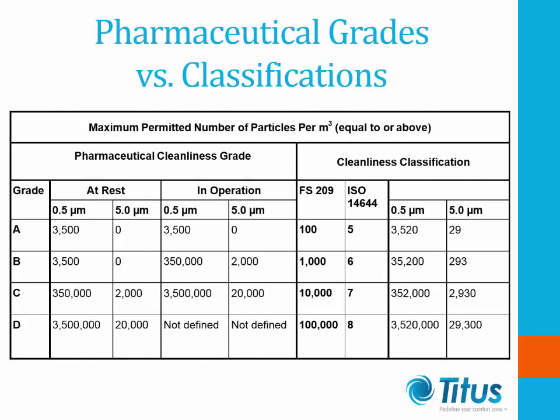For the pharmaceutical industry, there is another classification using grades: Grade A, B, C, and D, defined under two occupancy states — at-rest and in-operation. Typically, Grade A is considered equivalent to ISO 5, B to ISO 6, C to ISO 7, and D to ISO 8. However, if we look at total particle counts at 0.5 or 5.0 microns, the allowed counts may not be fully identical, so these classifications are not truly equivalent.